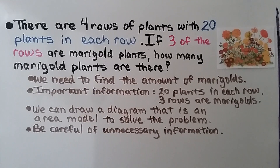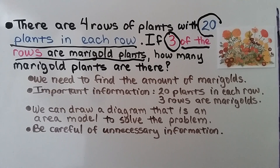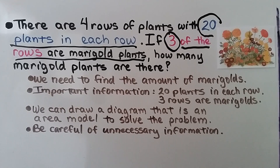There are four rows of plants with 20 plants in each row. If three of the rows are marigold plants, how many marigold plants are there? We need to find the amount of marigold plants. The important information is that there are 20 plants in each row and that three rows are marigolds. We can draw a diagram — an area model — to solve the problem, but be careful of unnecessary information. The first part says there are four rows of plants, but that's not actually important.